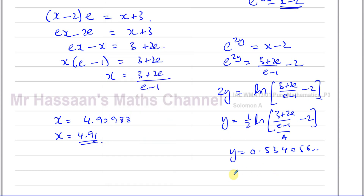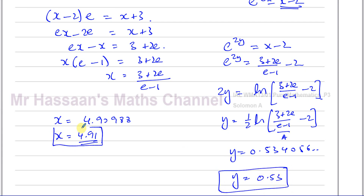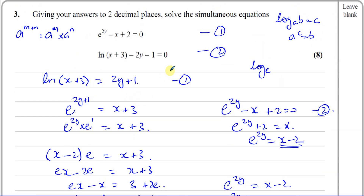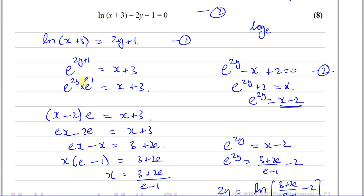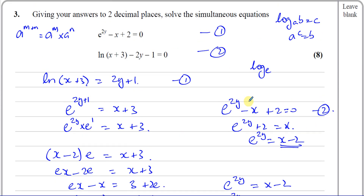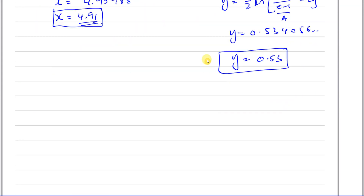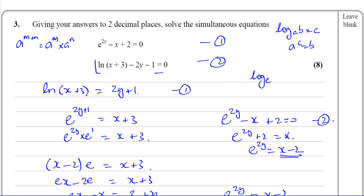So those are the values of X and Y to two decimal places as required. That's one way we've done it — we basically rewrote the logarithm equation in exponent form and then combined the two equations. So we rewrote equation 1, then equation 2, and combined them. We could alternatively rewrite in ln form and arrive at the same answer — let me show you how to do that as well.